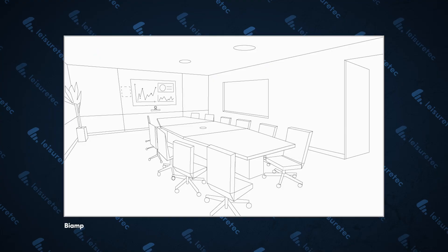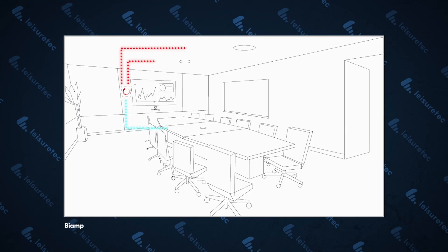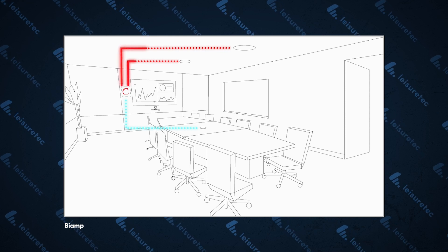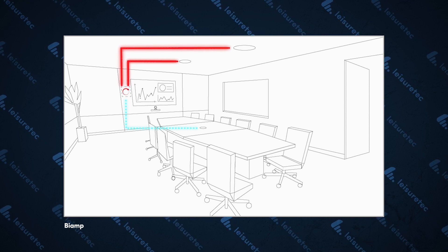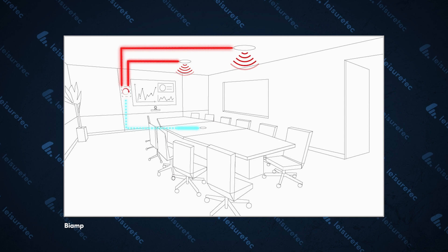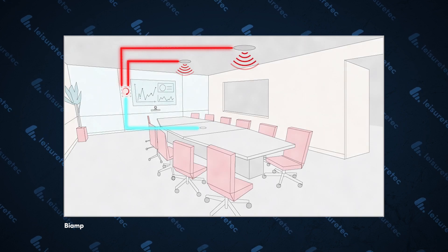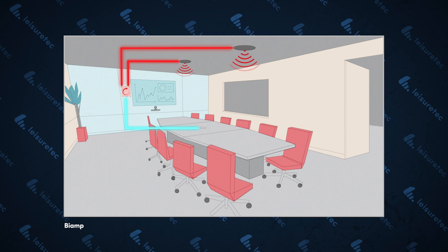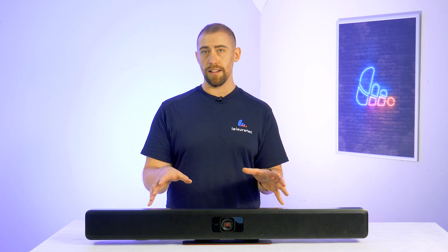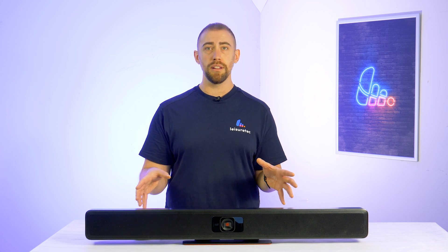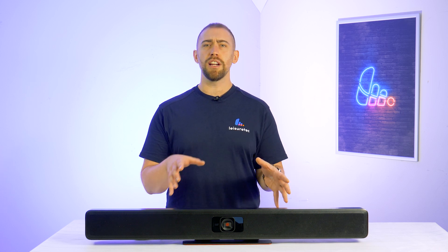The sequence begins by mapping and configuring all the different components. Next, the system will play a tone through each speaker, building a map of the room and allowing the system to tune the DSP and levels of the speakers. Once all the speakers are tested and configured, the system will test the new settings again with each speaker to ensure it's been optimized.